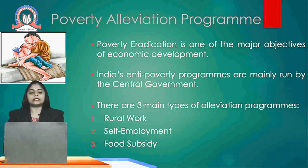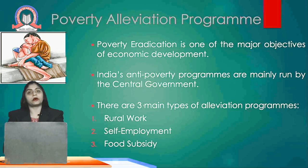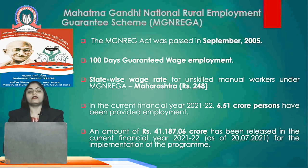These anti-poverty programs are mainly run by the Central Government. The alleviation programs help in generating employment for rural work, for self-employment, for providing food subsidy, for providing Avas Yojana i.e. housing facilities. Under various different schemes, the government is helping the poor people. The first six schemes we will cover are of employment generation.